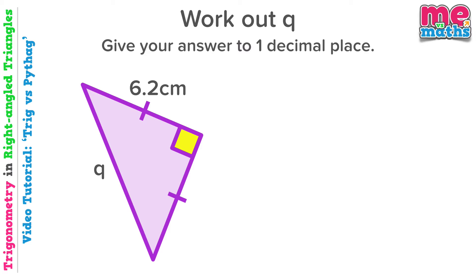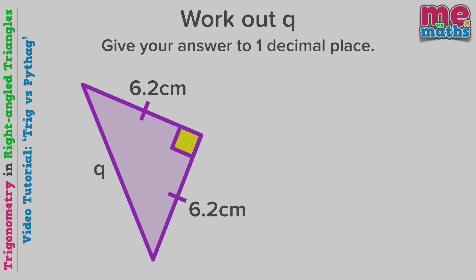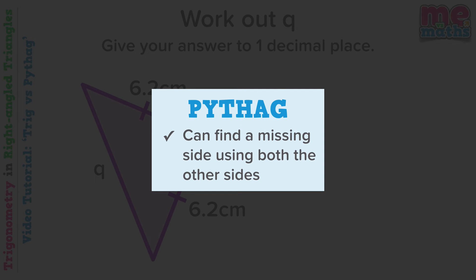Next up we have an isosceles triangle. Now it may appear at first glance that we've only been given one side, but because it's an isosceles, that means we actually know the other side there as well. So we can definitely use Pythagoras to find a missing side using both the other sides.